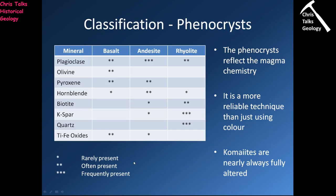So colour and phenocrysts — that's what's going to help us classify our volcanic igneous rocks, specifically those formed from lavas or lava flows.